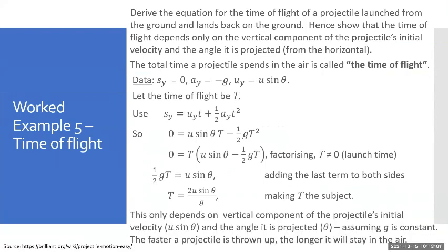So T = 2u sin θ / g. So this only depends on the vertical component of the projectile's initial velocity, that's u sin θ, and the angle it's projected, assuming g is constant. And the faster the projectile is thrown up, the longer it will stay in the air. And that's our derivation.